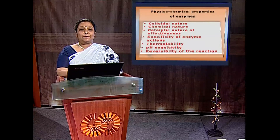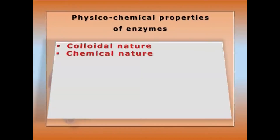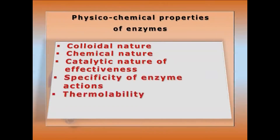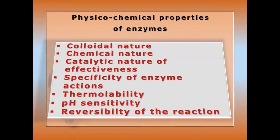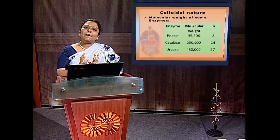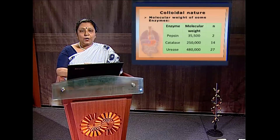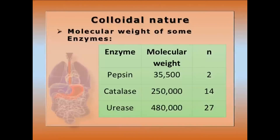The physicochemical properties of enzymes include colloidal nature, chemical nature, catalytic effectiveness, specificity of enzyme action, thermolability, pH sensitivity, and reversibility of reaction. Regarding colloidal nature, they are very large molecules with molecular weight as a multiple of 175,000. They cannot be dialyzed, their components are dissociable, and they have a high diffusion rate. Molecular weights of pepsin, catalase, and urease can be seen from the table.